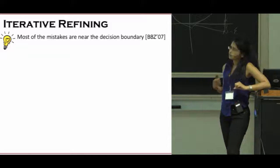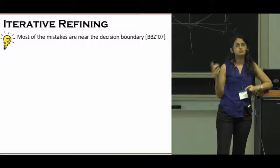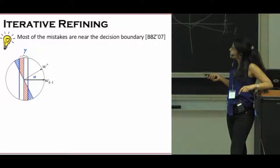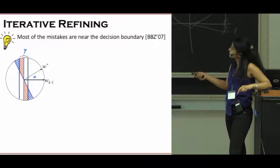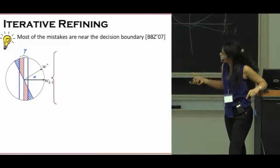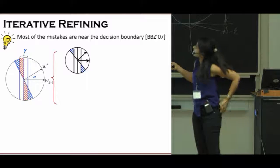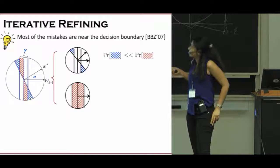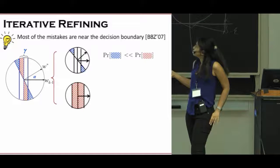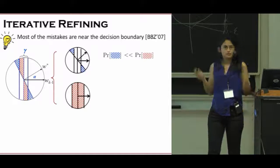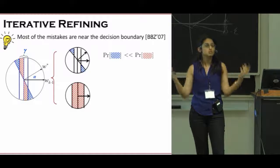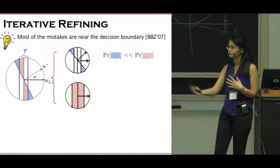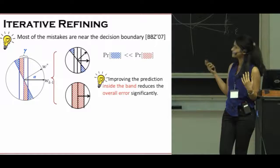A key idea here is that one of the properties of log-concave distributions, which we are considering in this work, is that most of the errors, or most of the mistakes that a half-space makes, is going to be very close to the half-space boundary. For example, here, if this is our true signal W star and this is W k-1, the error region is really the shaded region. It's divided into two regions, the error outside of some band and the error inside of some band. And inside this band, even if you make an error on everything, still the error inside the band is much larger than outside. So if you just focus on what's happening inside the band, you can improve the error of a half-space overall.